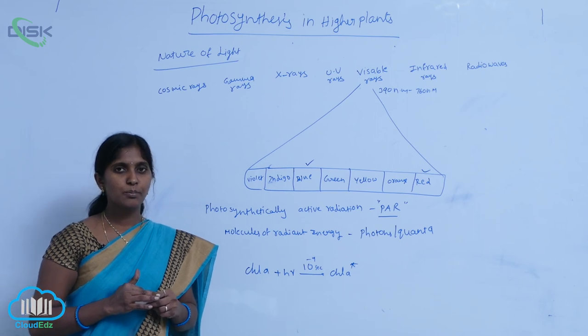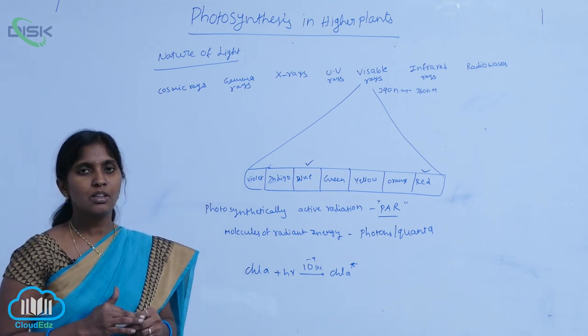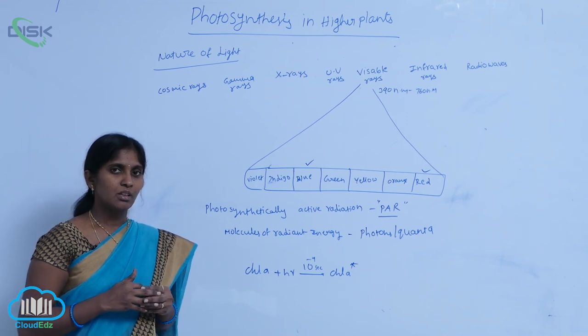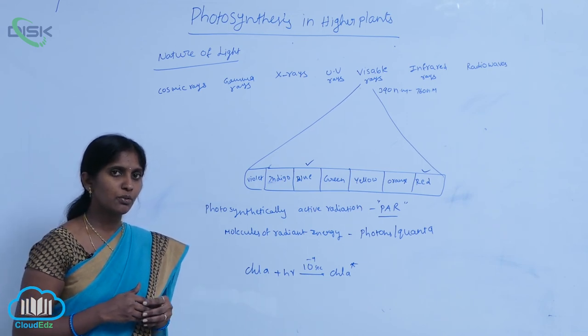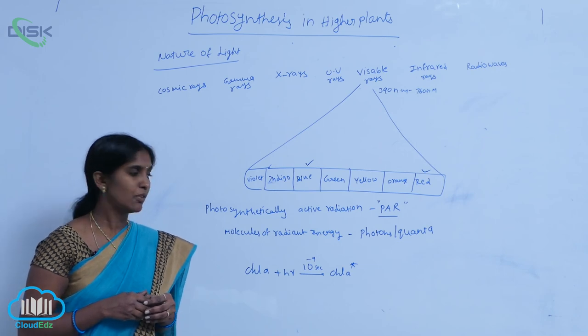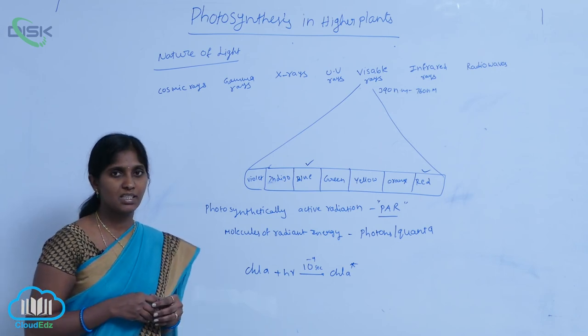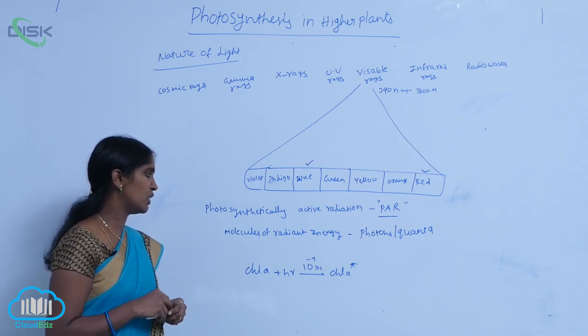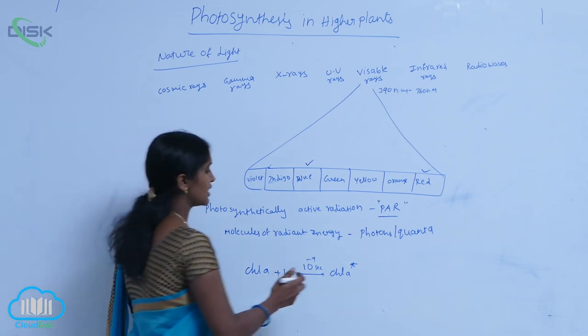Photons are absorbed by the chlorophyll. The chlorophyll can get excited. For absorption of the chlorophyll, it takes 10 to the power of minus 9 seconds. By absorbing the photons, the chlorophylls get excited.